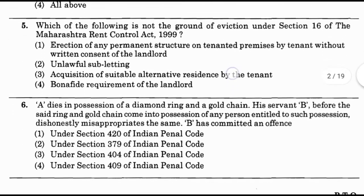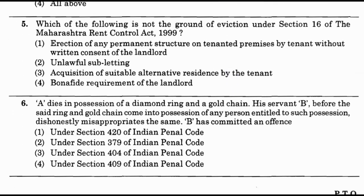Question number 5: Which of the following is NOT a ground of eviction under Section 16 of the Maharashtra Rent Control Act 1999? Option 1: erection of a permanent structure on tenanted premises by tenant without written consent of landlord; option 2: unlawful subletting; option 3: acquisition of suitable alternative residence by the tenant; option 4: bona fide requirement of the landlord. The answer is option 3 — acquisition of suitable alternative residence by the tenant.